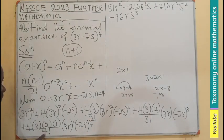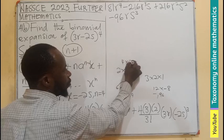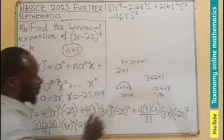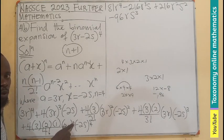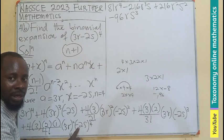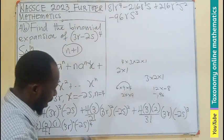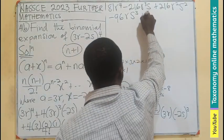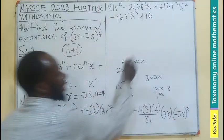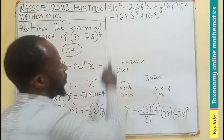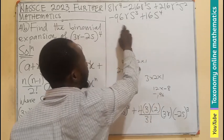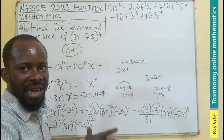For the last term: 4 factorial is 4 times 3 times 2 times 1, and everything in the numerator and denominator cancels. 3 exponent 0 is 1, R exponent 0 is 1, so everything is 1. Then negative 2 exponent 4 is positive 16. So the final term is plus 16 S exponent 4. Let's check — we have all 5 terms. This is the expansion using the binomial expansion method.